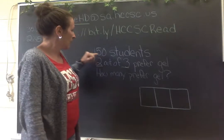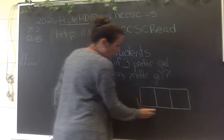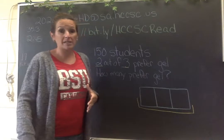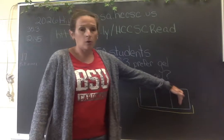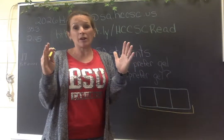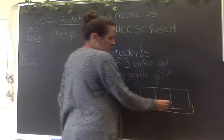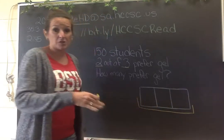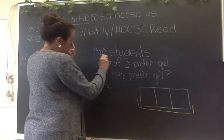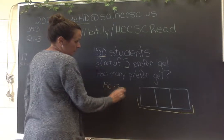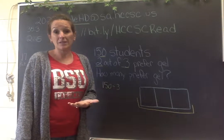Now I know that there are 150 students total in this school. This whole bar diagram represents those 150 students. My job is to figure out what each of the little boxes in the bar diagram represents. Since there are 150 students total and I need to put an even amount in each box, I'm going to figure out what 150 divided by 3 total boxes is. 150 divided by 3 is 50.